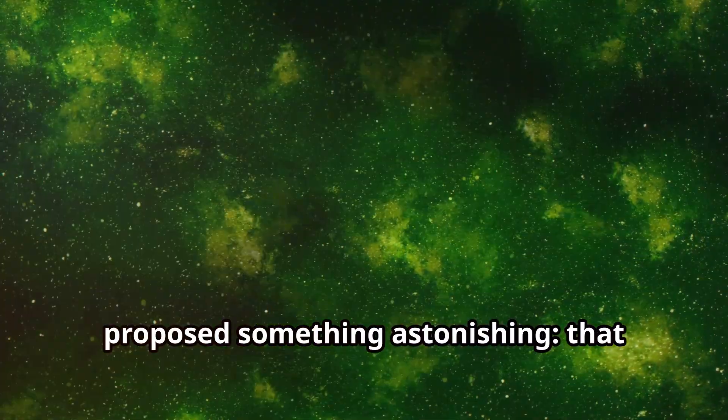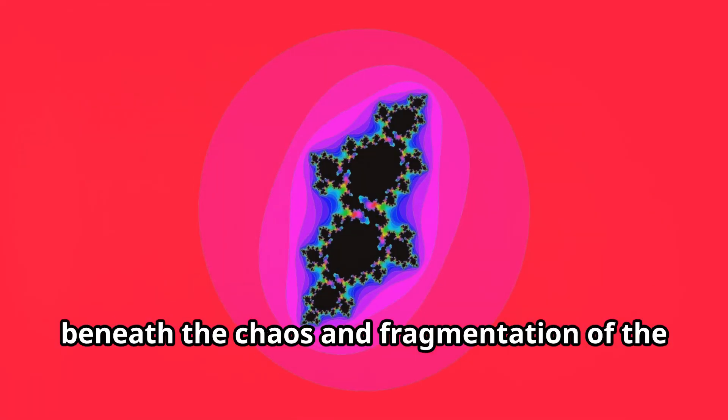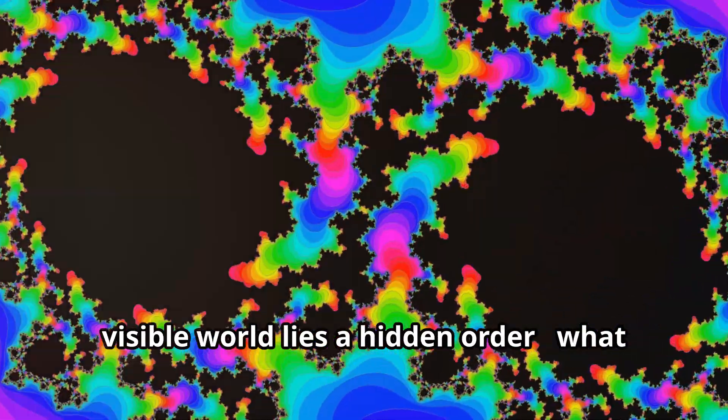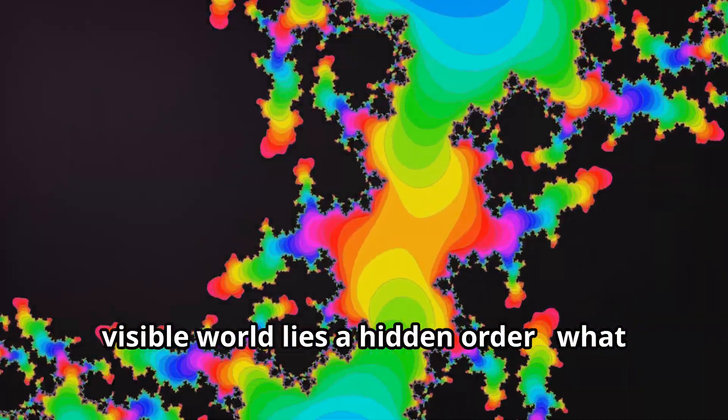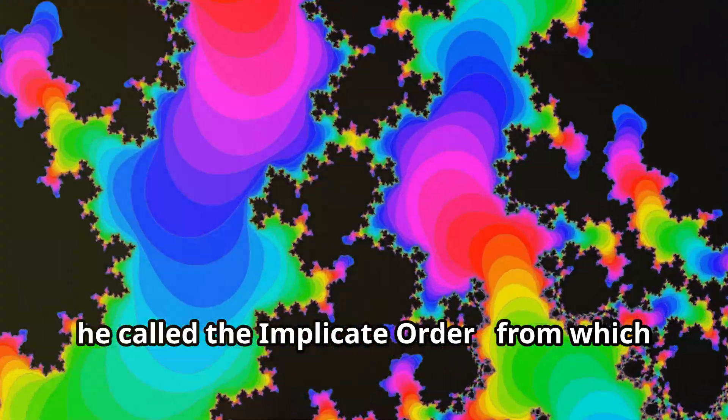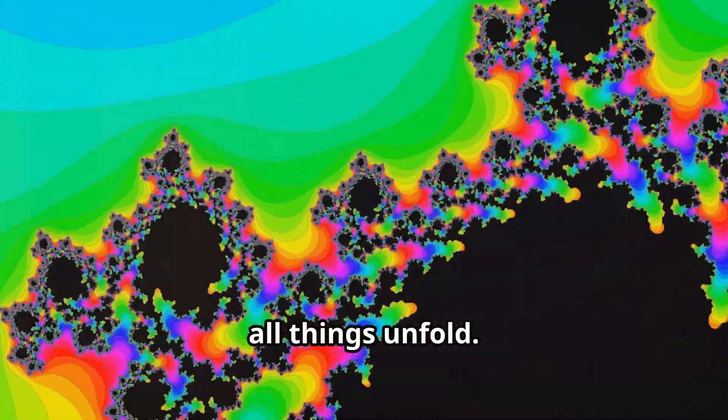David Bohm, one of the most visionary physicists of the 20th century, proposed something astonishing: that beneath the chaos and fragmentation of the visible world lies a hidden order, what he called the implicate order, from which all things unfold.